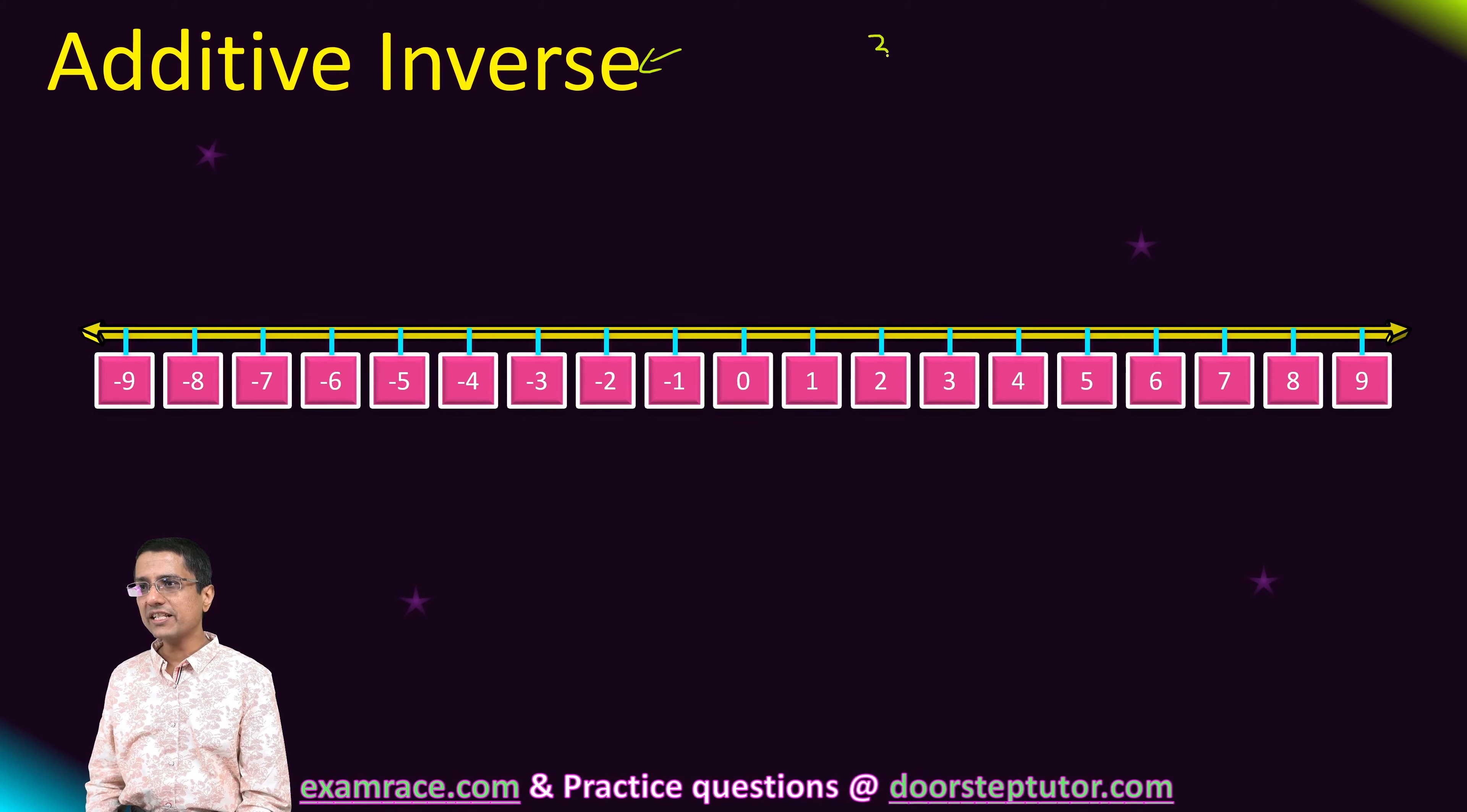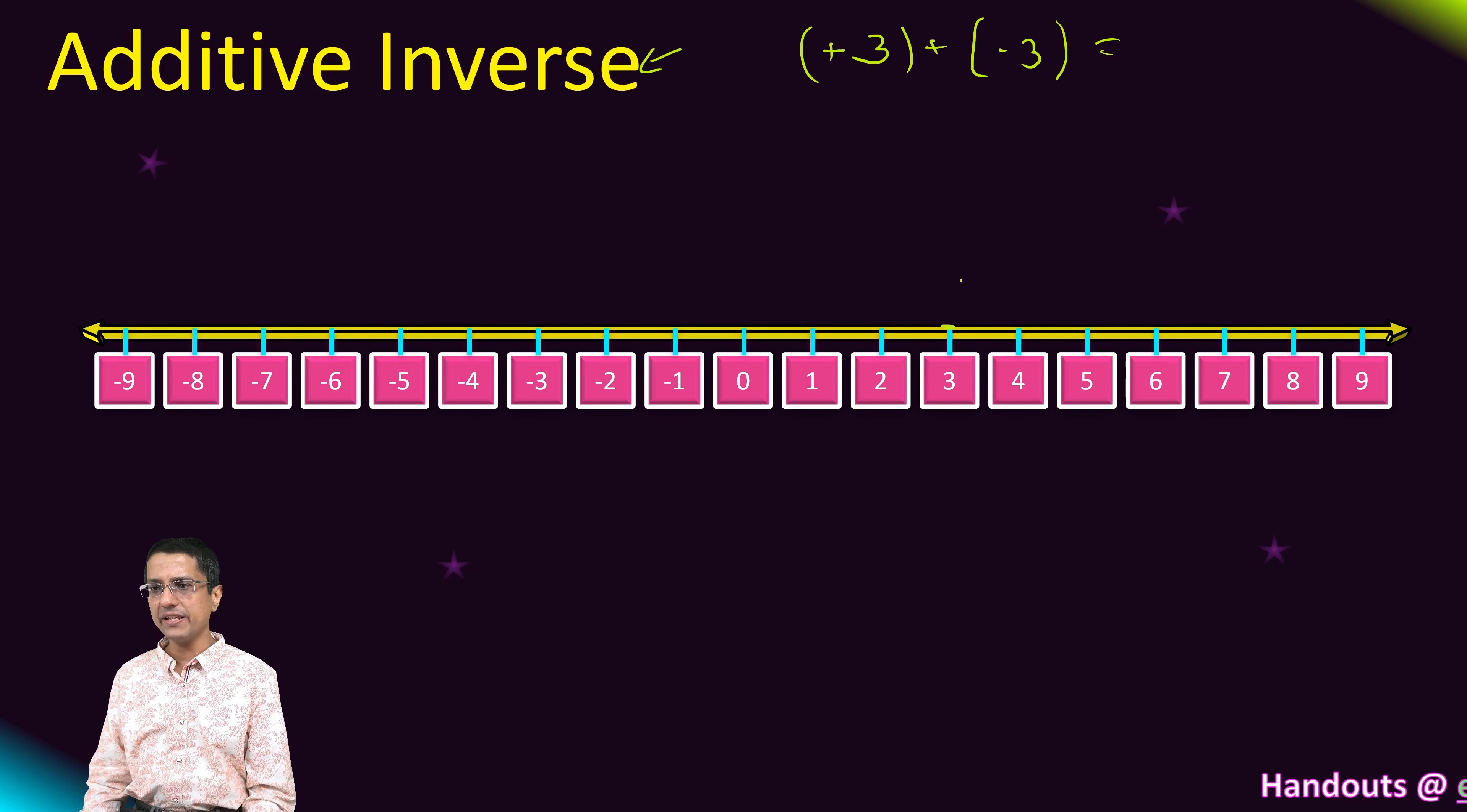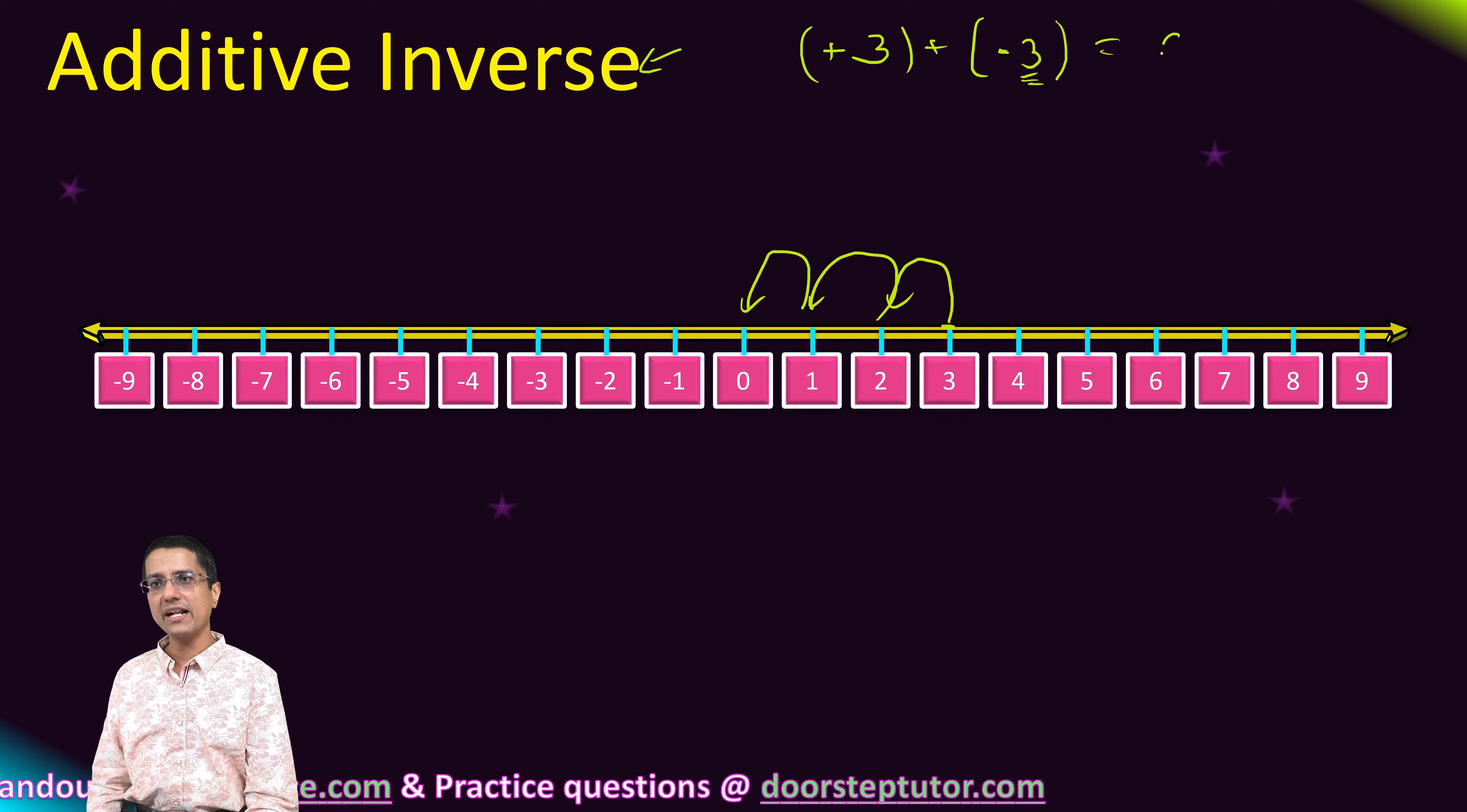So consider this expression: plus 3 plus minus 3. What would be the result? Let's do it. We know addition of integers. We will start with plus 3, and because we are adding a negative number, we will go towards the left. By how much? By 3. So we will go 1, 2, and 3, and we will end up at 0.